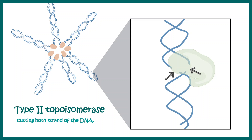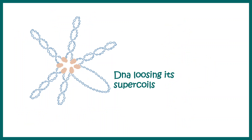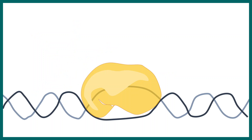After the activity of topoisomerase the DNA would lose its supercoils and become more relaxed, just as shown in this image. You can see that all the other loops of the chromosome are supercoiled, but in this particular loop the DNA has lost its supercoil and is now more relaxed.